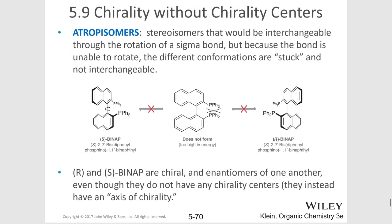Sometimes we can even have chirality without chiral centers. This molecule, which is a version of BINAP, is actually stuck in this conformation. It doesn't have a chiral center, but because it can't rotate where these triphenylphosphine groups can't rotate past one another, the different conformations are stuck and are not interchangeable. And these can in fact rotate plane polarized light — the left and right are non-superimposable mirror images, making this molecule actually chiral. They have an axis of symmetry rather than a chirality center. We're not really going to discuss this type of molecule in this course, but we're discussing it for completeness in this chapter.